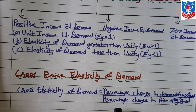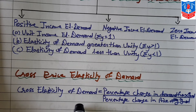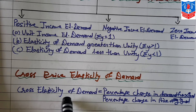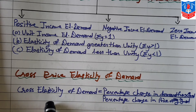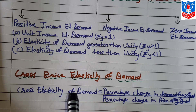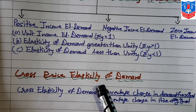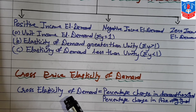Cross price elasticity applies to two types of related goods: substitute goods and complementary goods. Substitute goods are those which can be easily used in place of a given good to satisfy a want, as they are close alternatives. Complementary goods are those consumed together or jointly — one good cannot be consumed without the other; they must be consumed together to satisfy a given want.